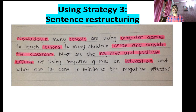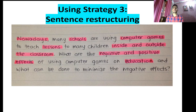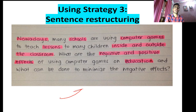For sentence restructuring, here is an example: 'Nowadays many schools are using computer games.' The highlighted keywords are: computer games, inside/outside the classroom. You can use synonyms: for 'nowadays' write 'in modern times' or 'in the contemporary world,' for 'schools' write 'education institutes,' for 'computer games' write 'digital games,' 'e-games,' or 'e-sports.' For 'inside/outside' you can use 'negative/positive,' 'pros and cons,' and for 'effect' you can write 'impact' or 'influence.'